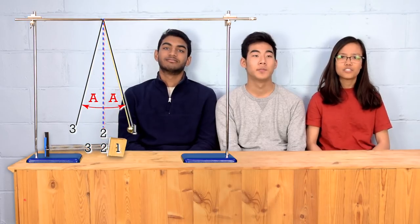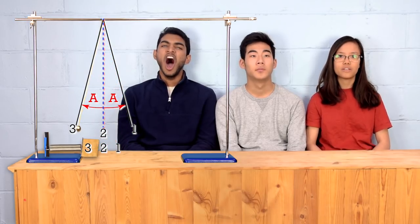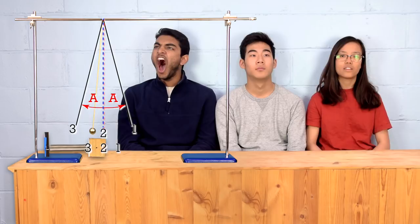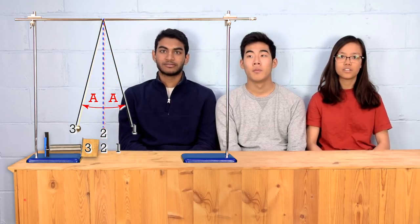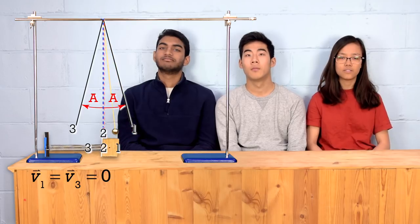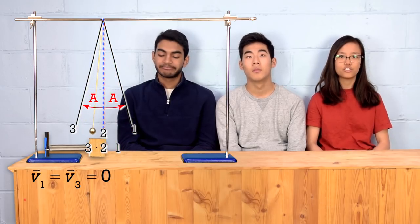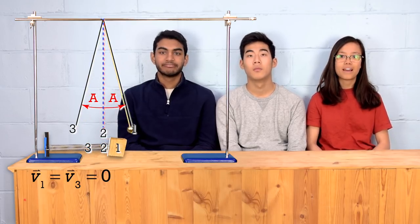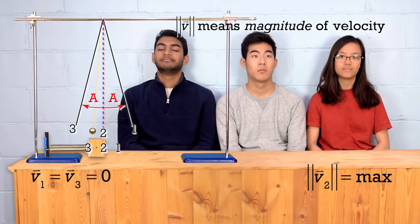Let's see. At the two extreme positions, 1 and 3, where the magnitude of the displacement from rest position equals the amplitude, the object changes direction, so the velocity is 0. At rest position, position 2, the magnitude of the velocity of the object is at a maximum value. Correct.